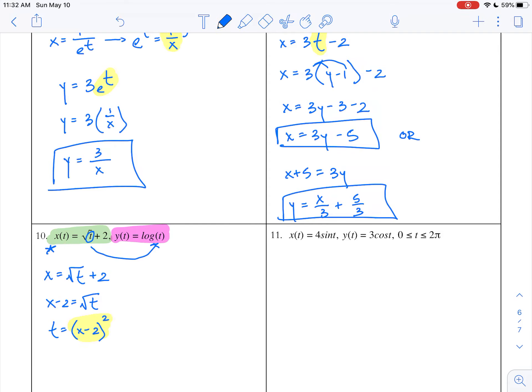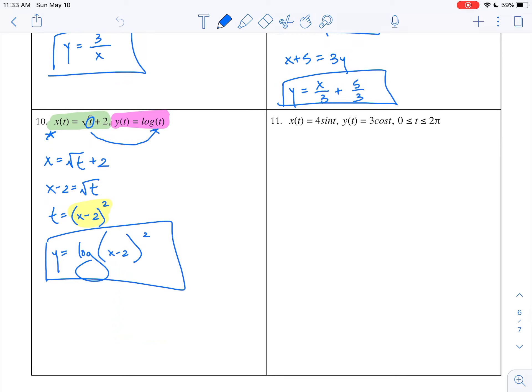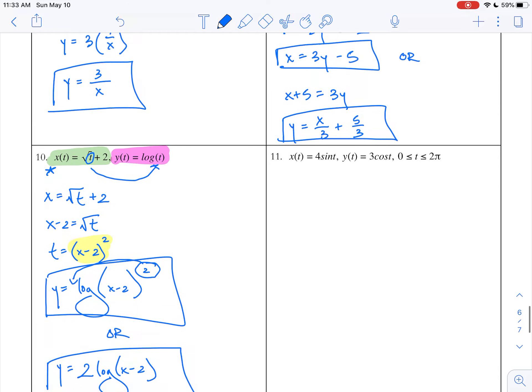Everywhere I see a t, I can replace it with (x-2)². So I get y = log((x-2)²). That's one possible option as an answer. Or to review some skills, when I have a log to a power, I can bring that down to the front. So I can say y = 2log(x-2).